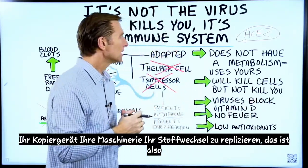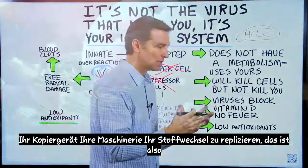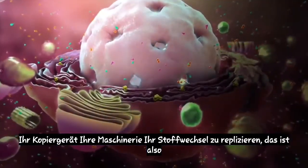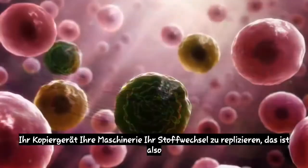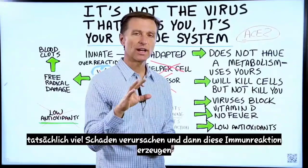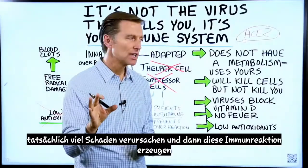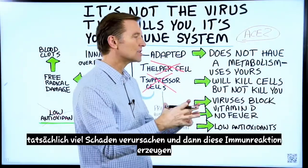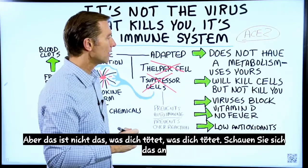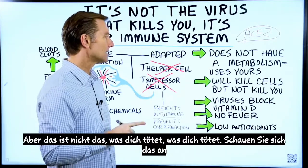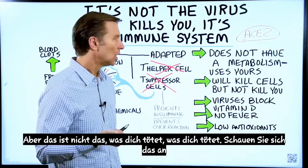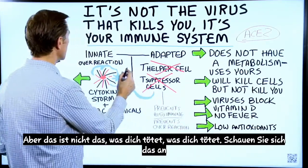It hijacks your copy machine — your machinery, your metabolism — to replicate. That's actually creating a lot of damage, and then it creates an immune reaction. However, that's not what kills you.